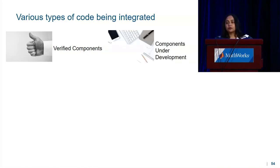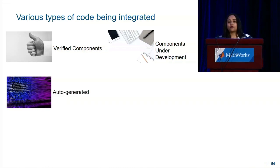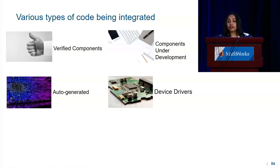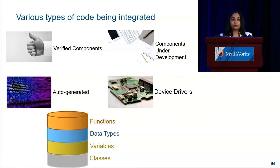You have verified components that are under development that perhaps your model needs to be protected against. You have auto-generated code that could have thousands of interfacing elements with Simulink, and you have device drivers that often have different behavior for simulation, code generation, and link against target-specific libraries for code generation. In addition, when you're bringing in your C code you're bringing in functions, data types, variables, as well as C++ classes.